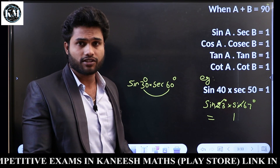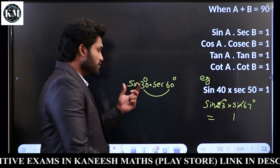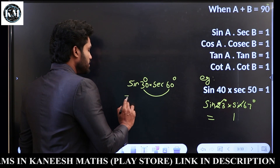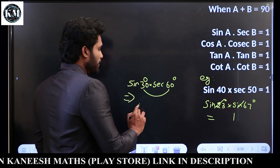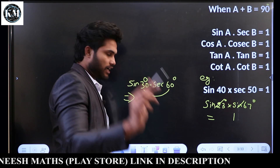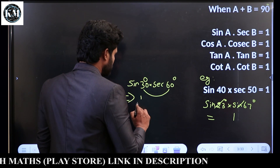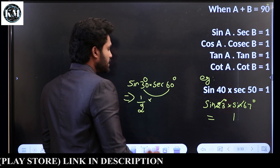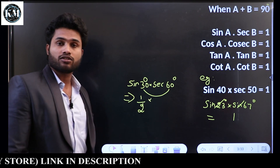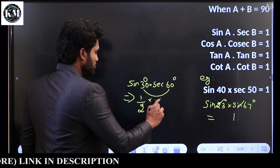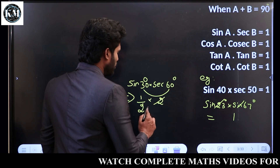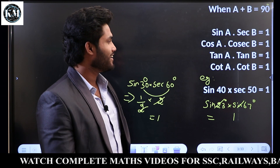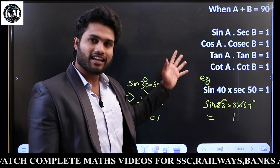We can see the Trigonometry table values. Sin 30 is 1 by 2, Sec 60 is 2. So solving: 1 by 2 × 2 equals 1. Simple.